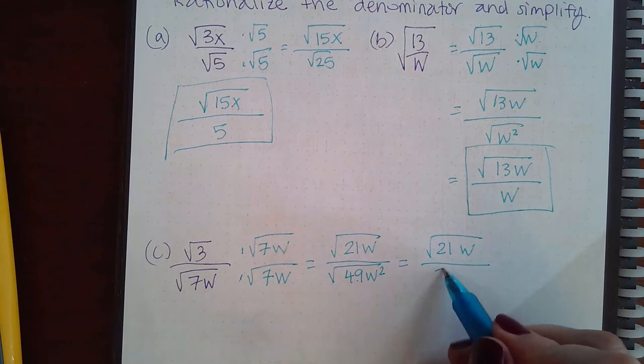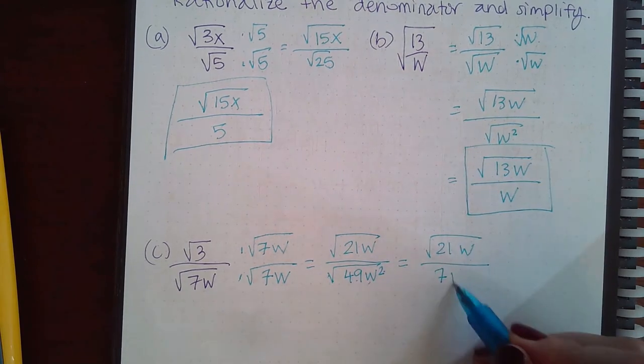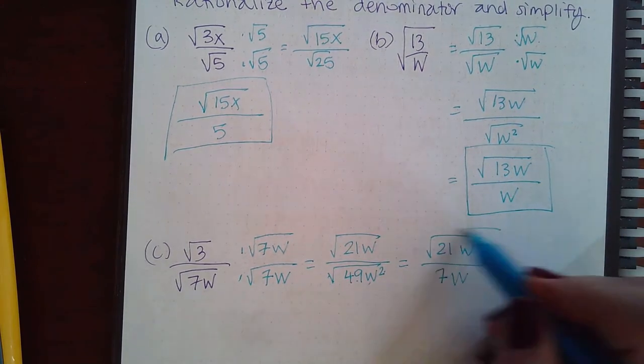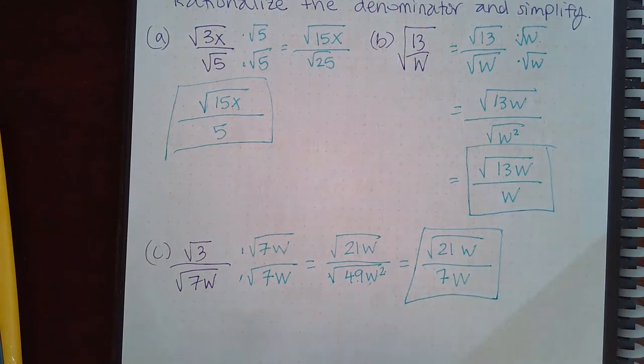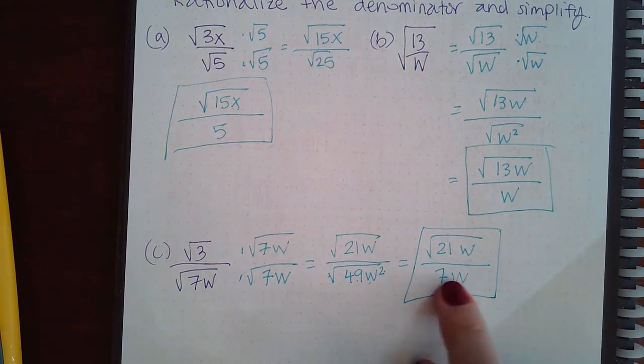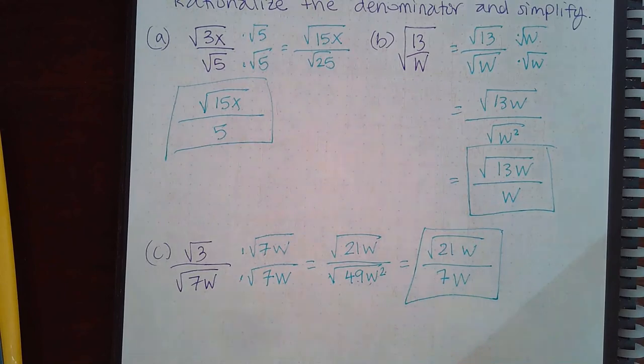the square root of 49 is 7, the square root of w squared is just w, and you cannot simplify that any further because this is outside of a radical and this 21w is inside of a radical, so it stays just like that.